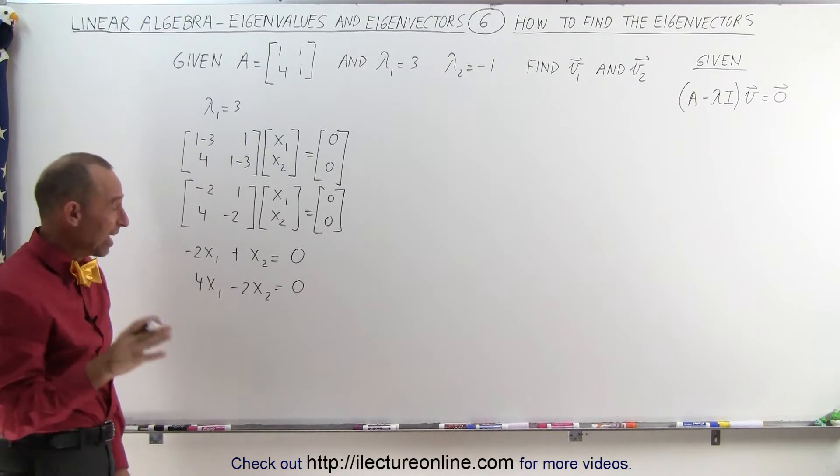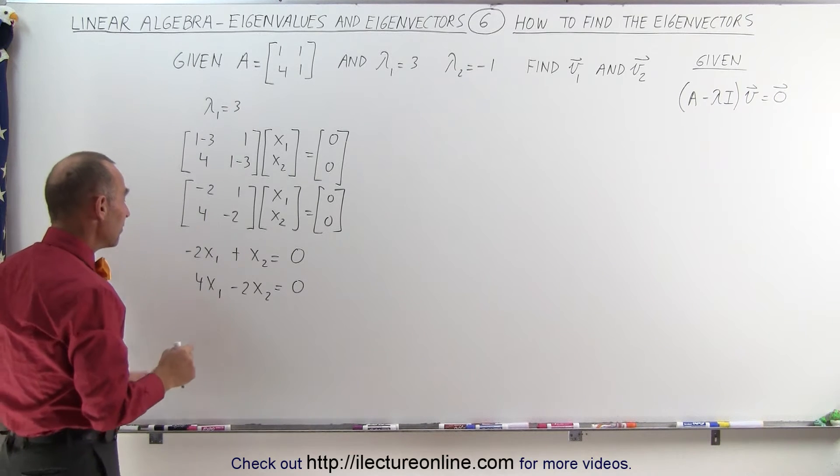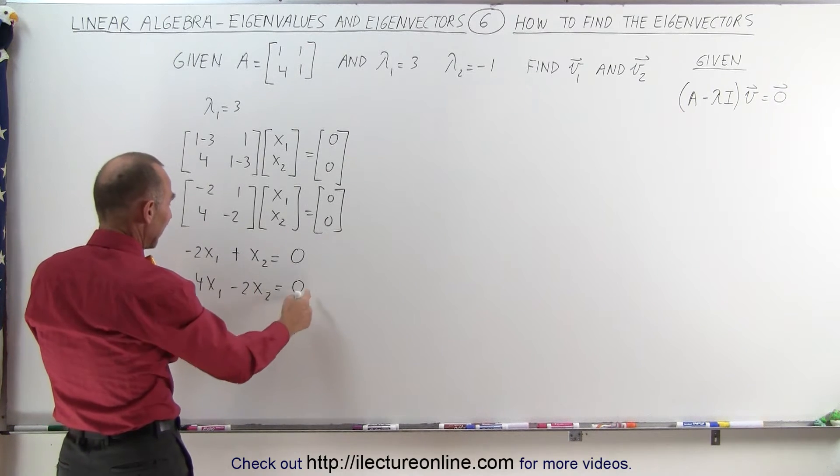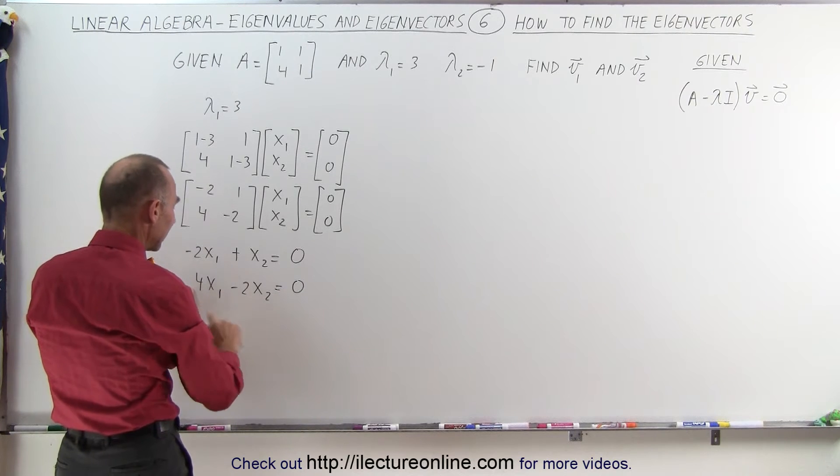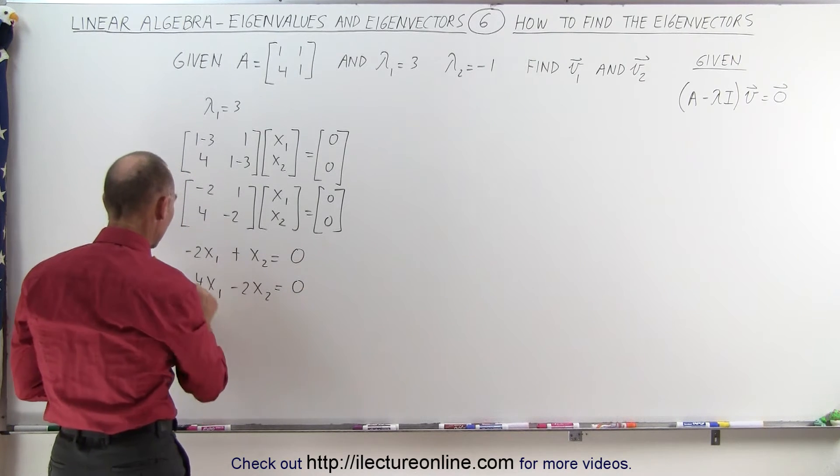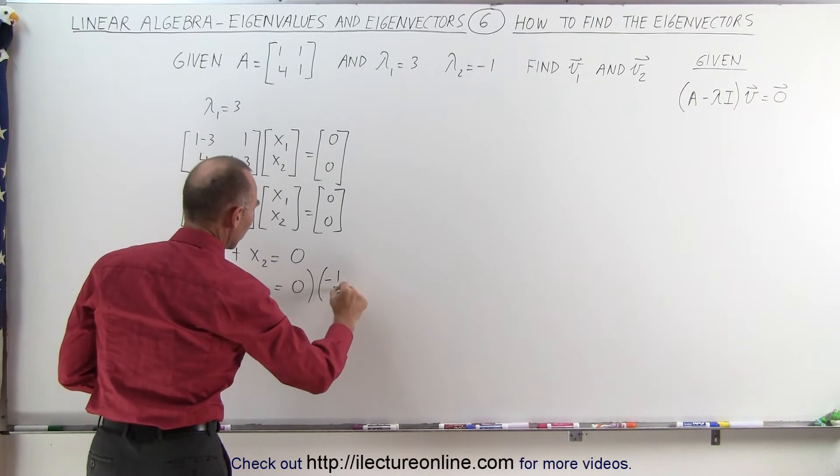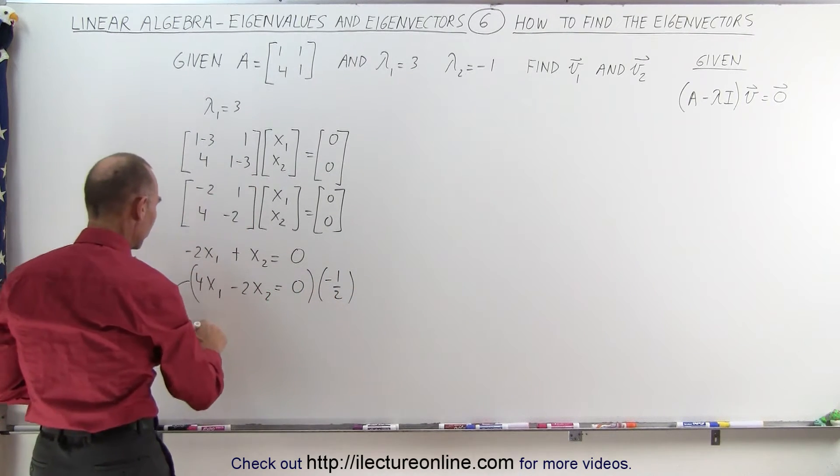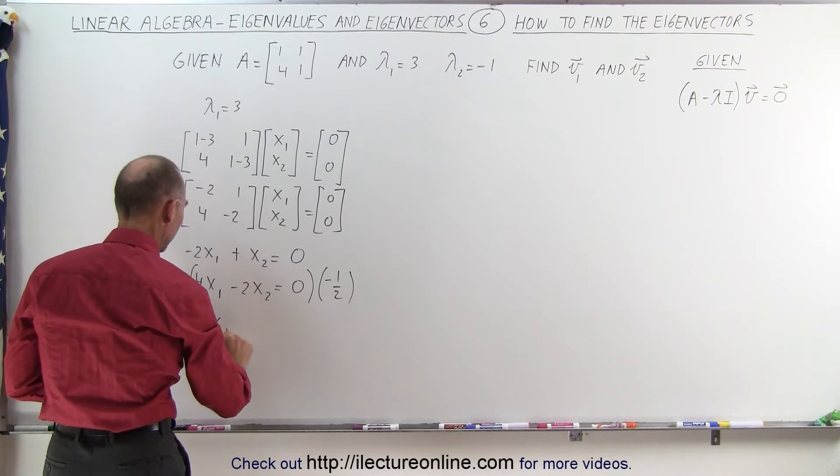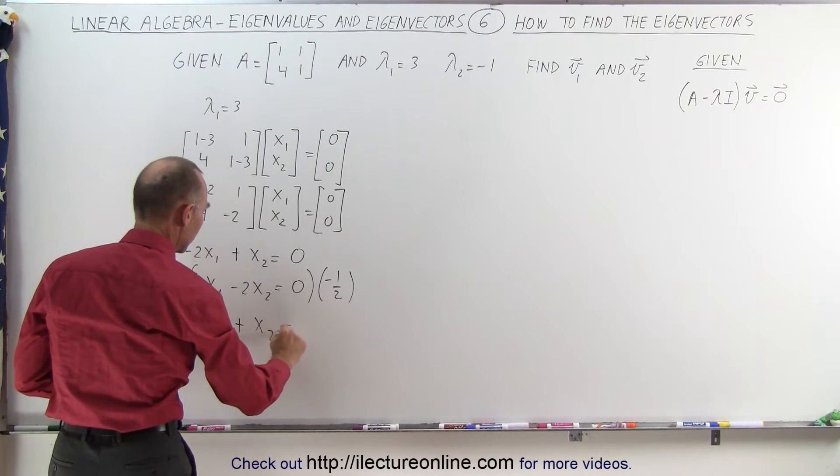Now it turns out those are actually the same two equations. If I divide this equation by negative 2 on both sides, I get the following. So if I multiply this times a minus 1 over 2, then the second equation will become minus 2x1 plus x2 equals 0.